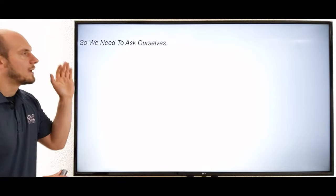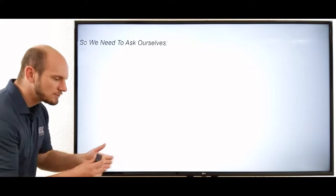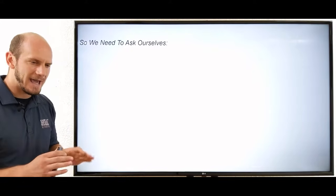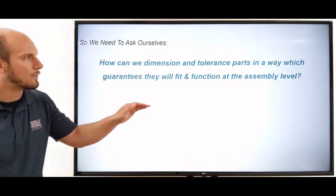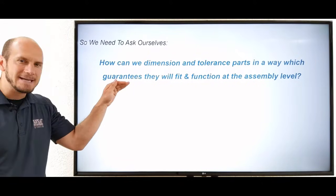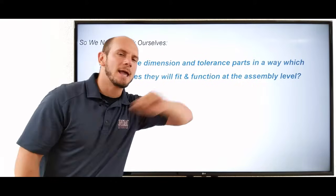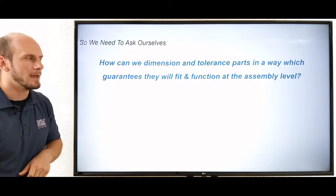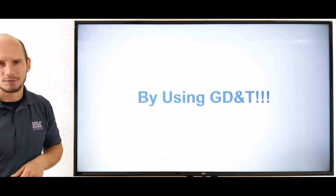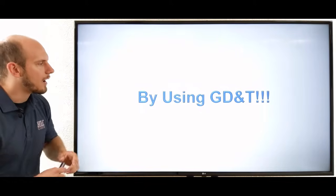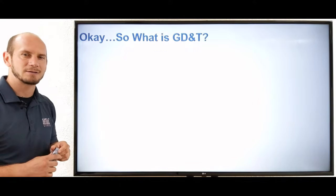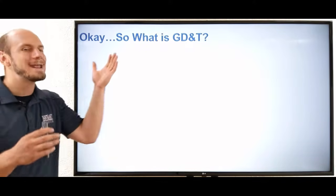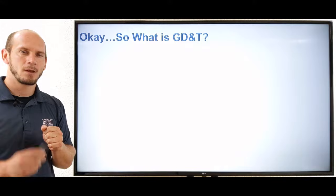So with that, we need to ask ourselves if traditional dimensioning and tolerancing has some gaps, how can we dimension and tolerance parts in a way which guarantees they will fit and function at that assembly level? How do we do this? By using GD&T. All right, so that's what we use GD&T for, but you're probably still asking yourself, what is GD&T?